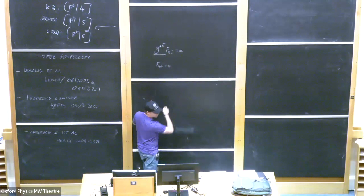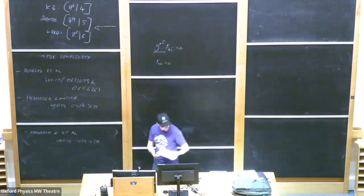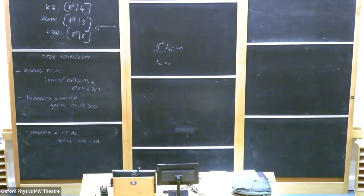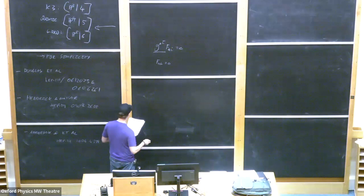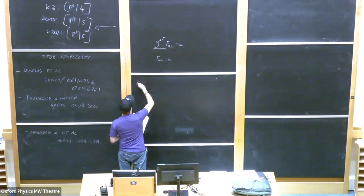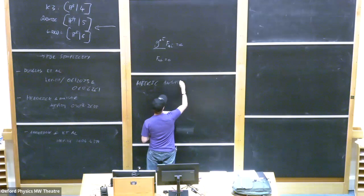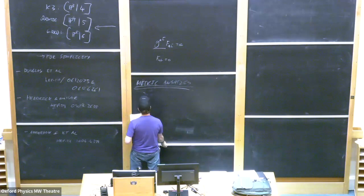Let's get started. I'm going to start by setting up some notation and then talk about metric ansatzes. Once we've talked about metric ansatzes, we'll talk about tuning those parameters that come up. So let's start with some basics on P^n, and metric ansatzes.